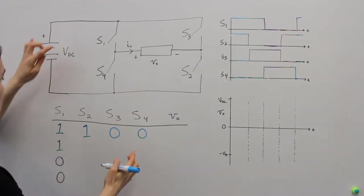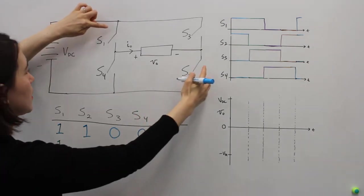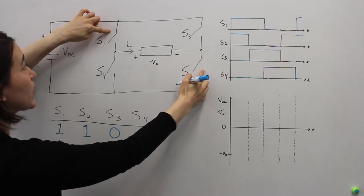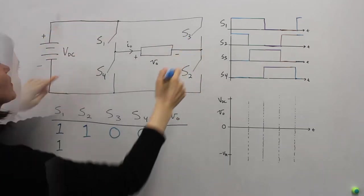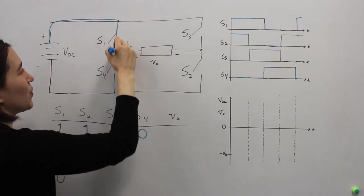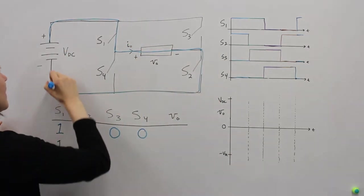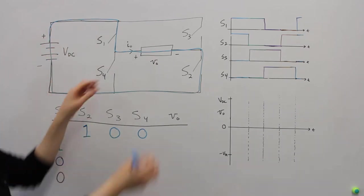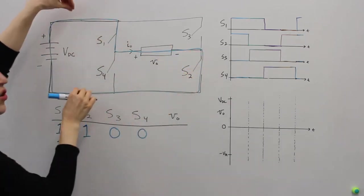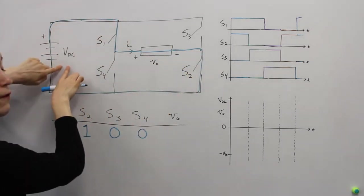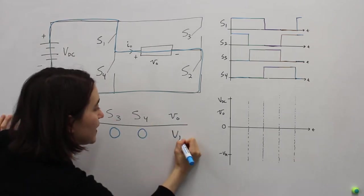Now we can look at this. Let's close these two. When we close these two, these two are open. The current path will be through here. And we can see this load is now connected directly over the full VDC. So our voltage here is VDC.